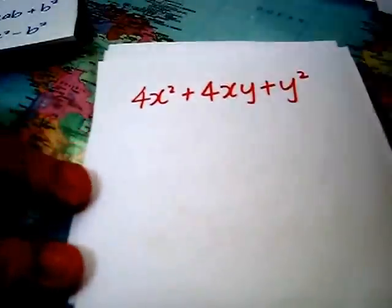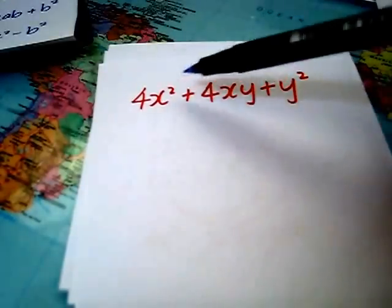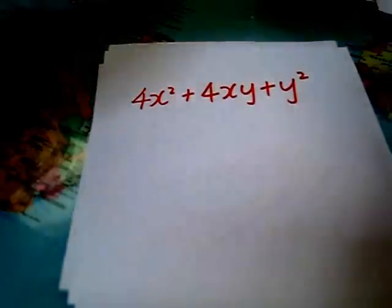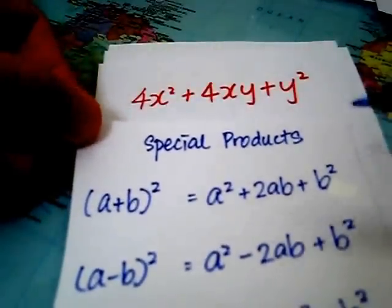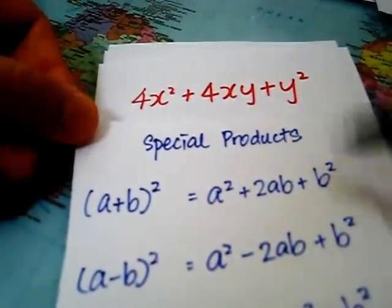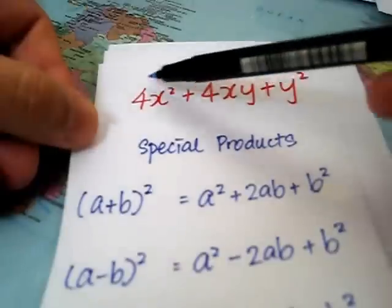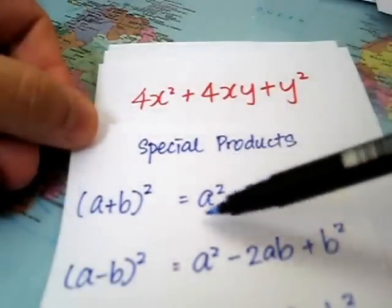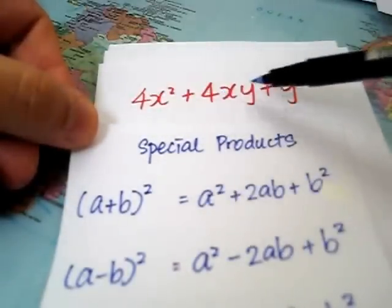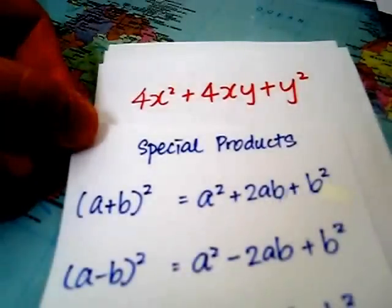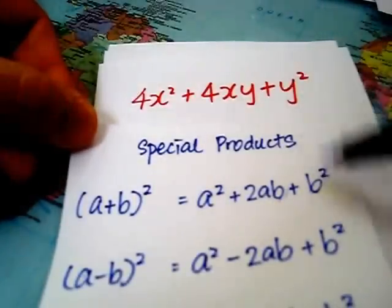Next, look at this. 4x square plus 4xy plus y square. Let's compare. It looks like the first special product. And now, we should try to express 4x square in the form of a square. And 4xy is the form of 2 times ab. And of course, this looks the same.